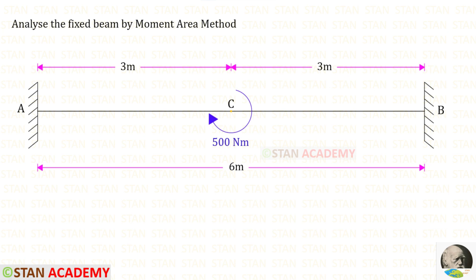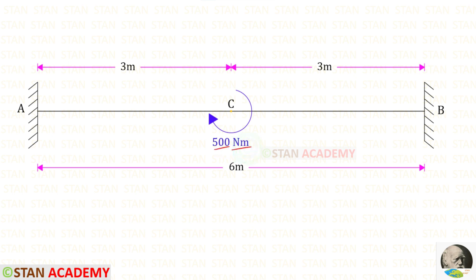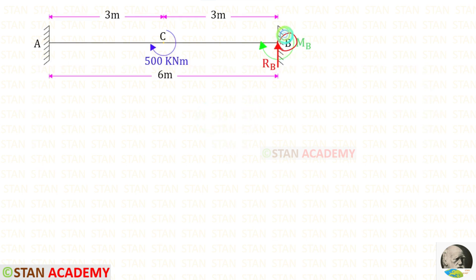Hello everyone. Today we are going to analyze a fixed beam by the moment area method. The span of the beam is given as 6 meters. In this beam there is a concentrated moment of 500 Newton meters acting in the clockwise direction. From point B we are going to find the moment values about point A. We are going to find the moments separately: first by the vertical reaction RB, then by the moment MP, and then by the moment 500.